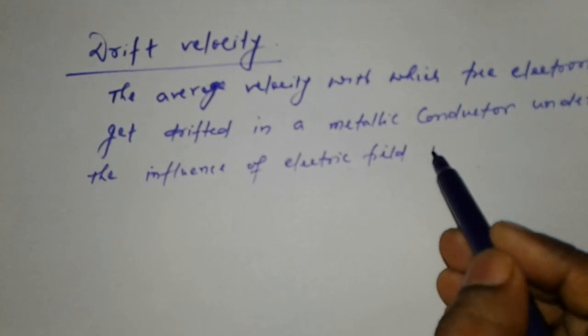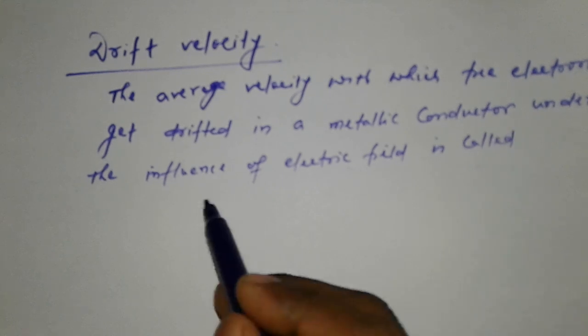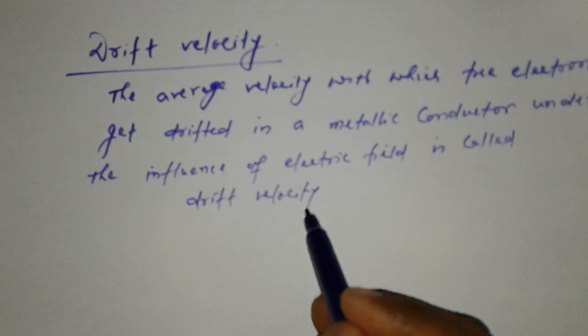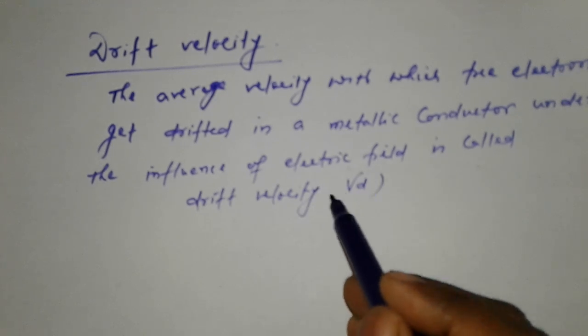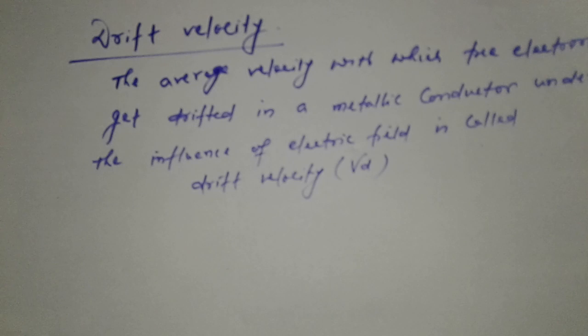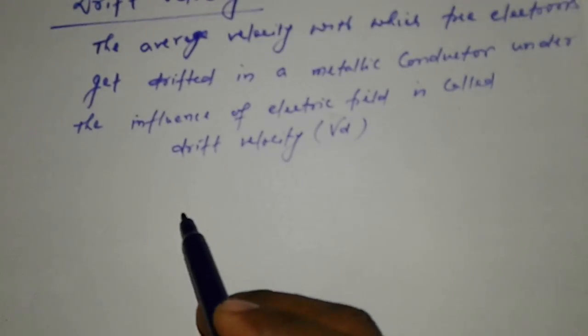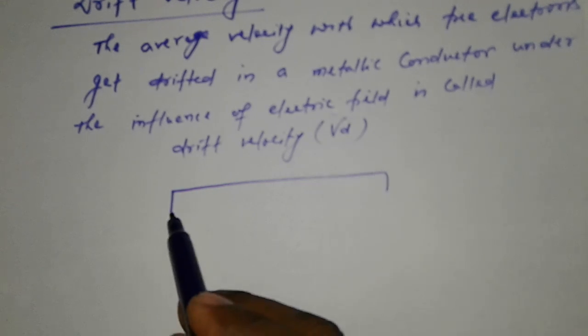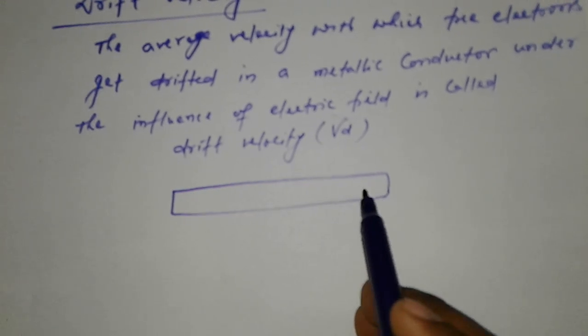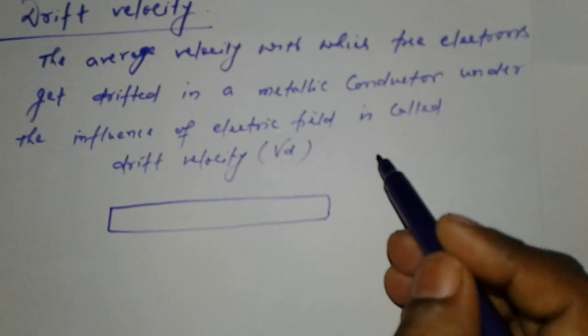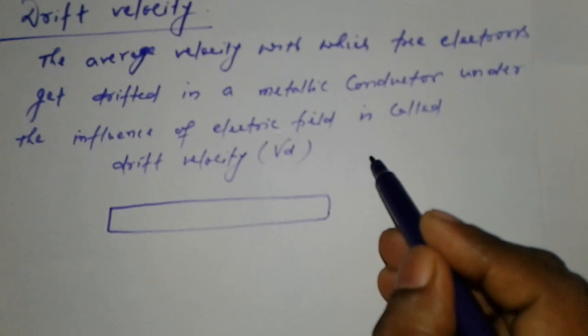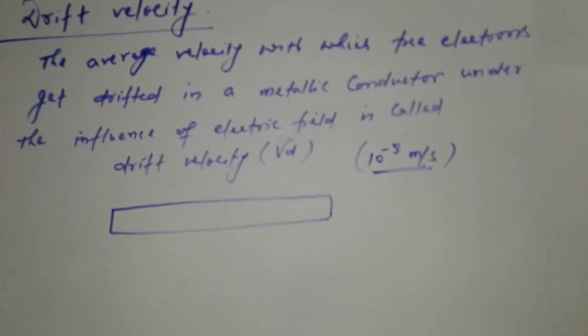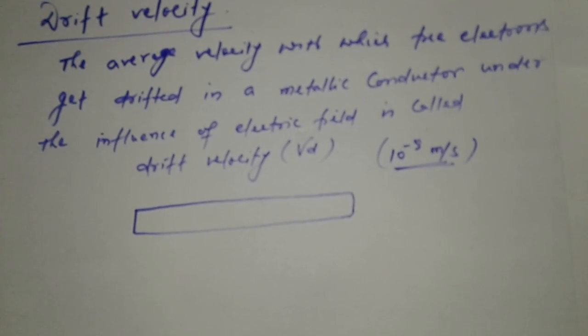This is called drift velocity. It is denoted by Vd. Drift velocity is a vector quantity, so it has magnitude and direction both. It is the average value of free electrons. Drift velocity is 10 to the power minus 5 meter per second. This is the average value of drift velocity of free electrons.